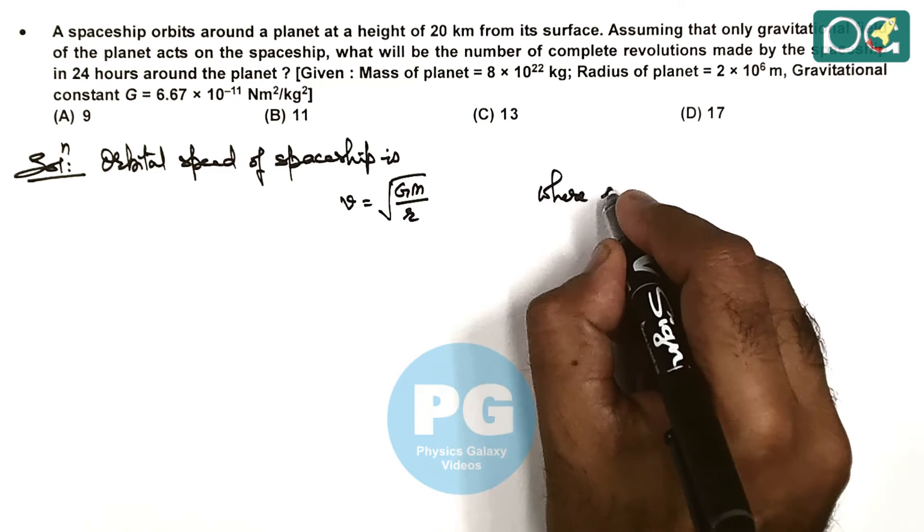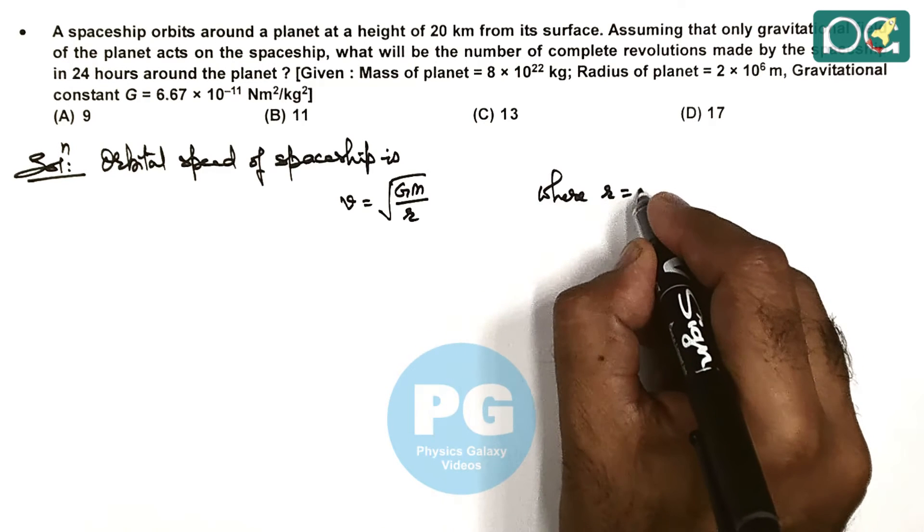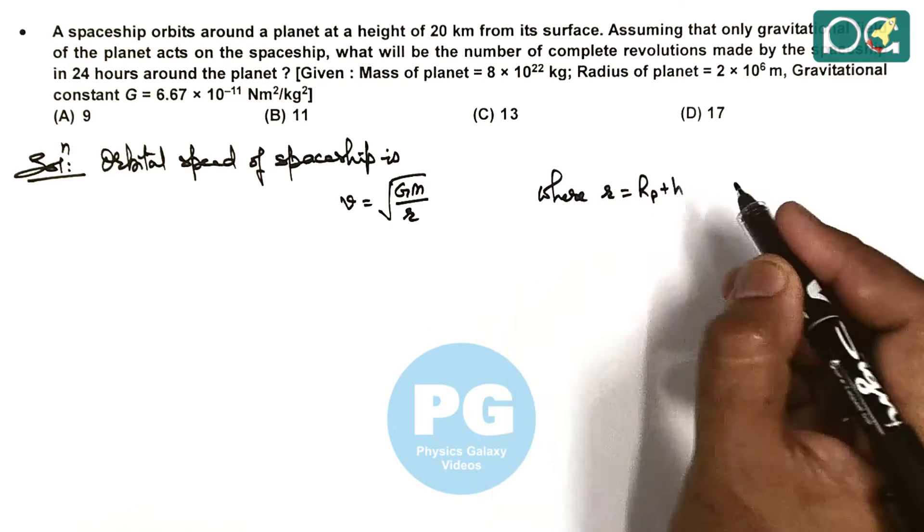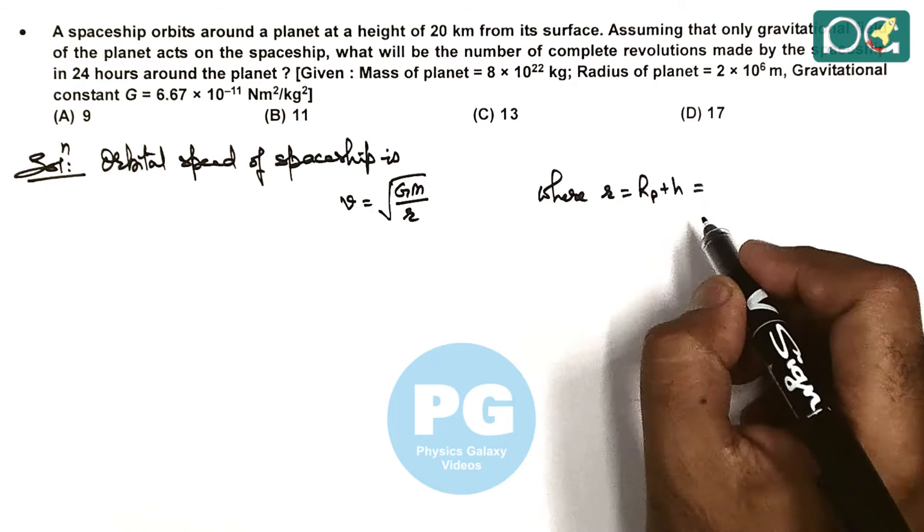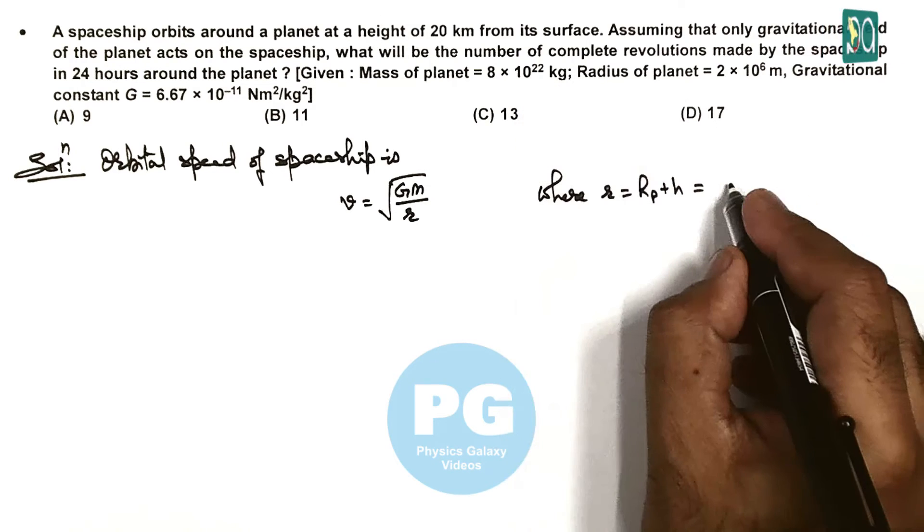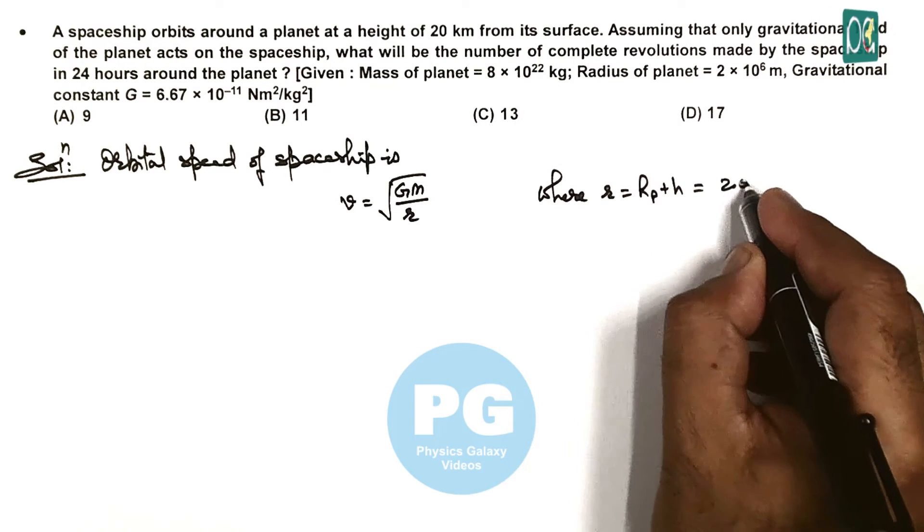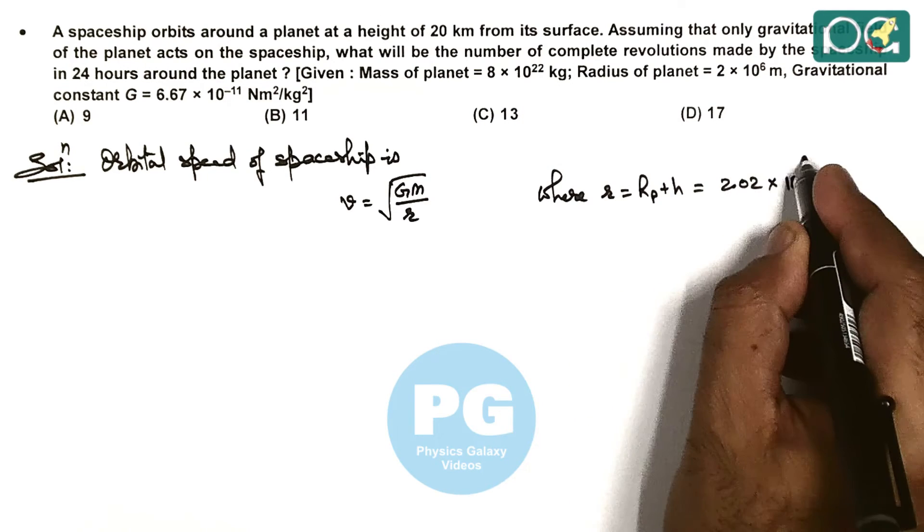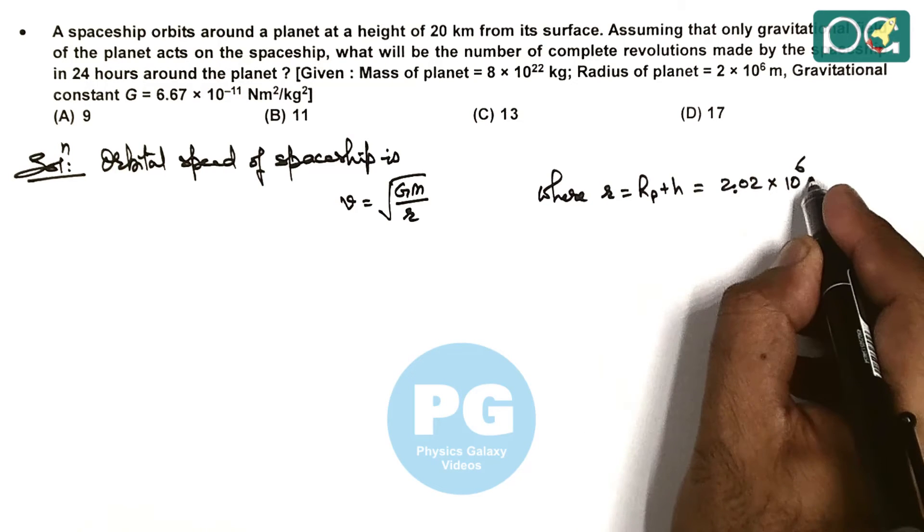We can write r equals the radius of the planet plus height above the surface, which is 2000 km plus 20 km, so this is 2.02 × 10⁶ meters.